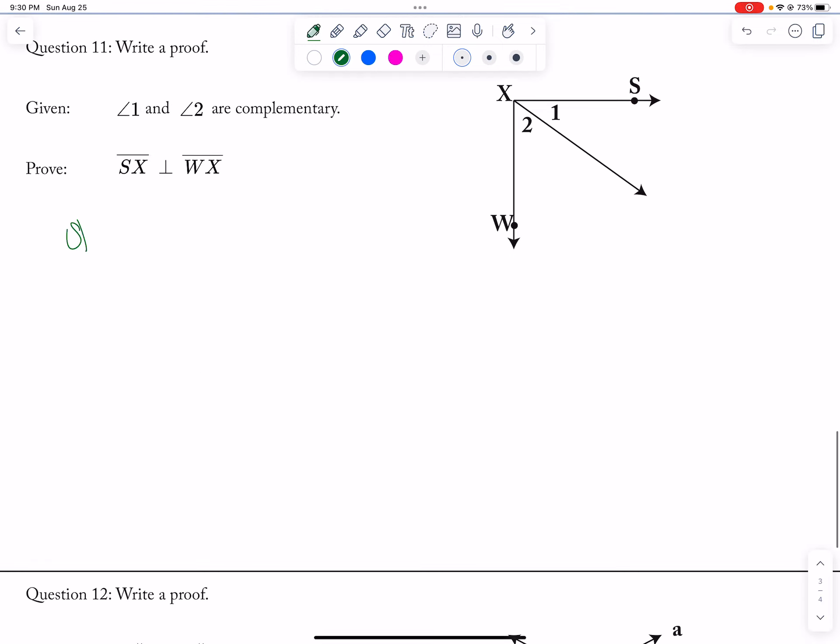And then 11, statements and reasons. Okay, so my first statement is angle 1 and angle 2 are complementary, and that is given. And then, that means that measure of angle 1 plus measure of angle 2 is equal to 90 degrees, definition of complementary angles.